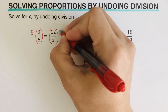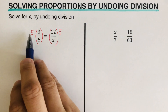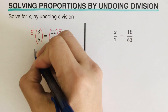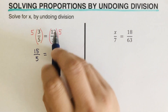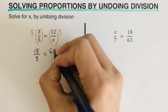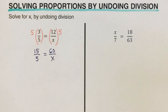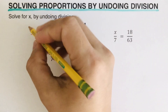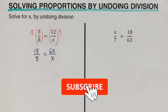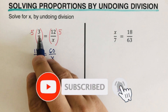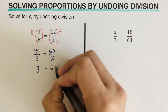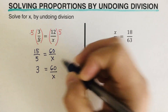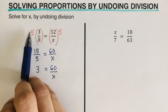I'll multiply this side by 5 as well, then multiply across: 5 times 3 is 15, over 5, is equal to 12 times 5 which is 60 over x. Alternatively, since we have 5 on both sides, we can cross them out. That gives us 15 divided by 5, which is 3, equal to 60 over x.